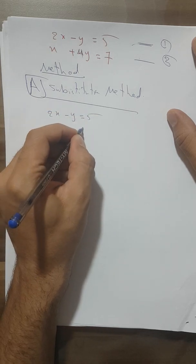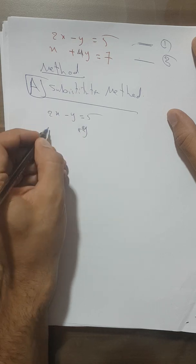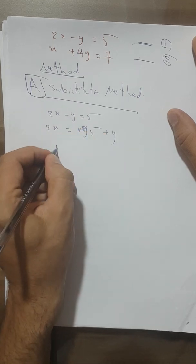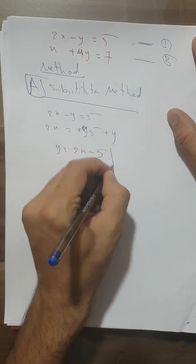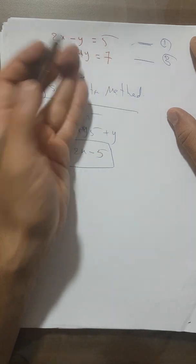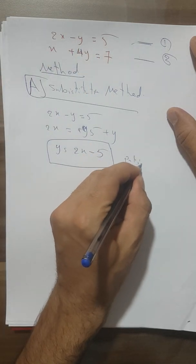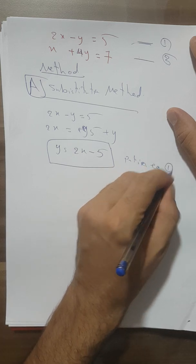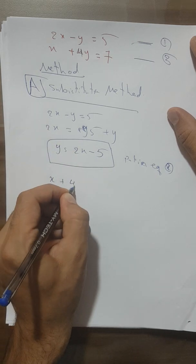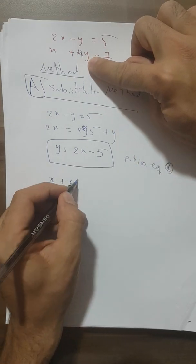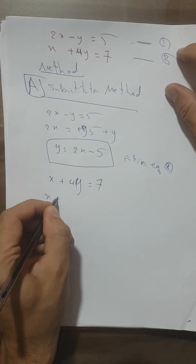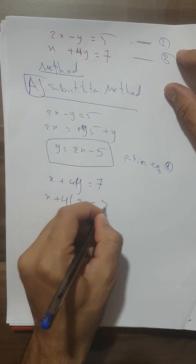In the substitution method, from equation one (2x minus y equals 5), we can express y as y equals 2x minus 5. Then we substitute this value into equation two: x plus 4 times (2x minus 5) equals 7.